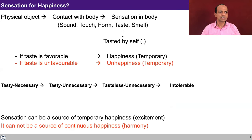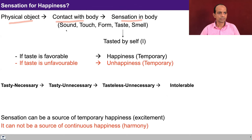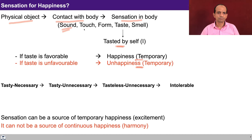Whenever you are consuming some physical facility, you can see whether you are consuming based on preconditioning, sensation, or natural acceptance. When you go for sensation for happiness, there is a physical object outside which makes contact with the body, and then there is sensation in the body. For example, there is some music coming from a physical object, reaching your ears — the sound makes contact with the body, producing sensation, which is tested by the self. If the taste is favorable, one may feel happy, but this happiness is temporary. If the taste is unfavorable, one may feel unhappy — and again it is temporary.